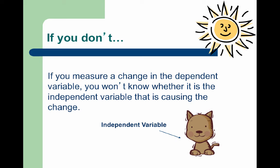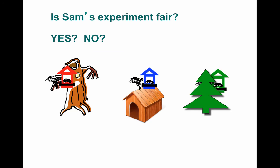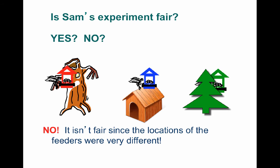Let's see if you can determine if these experiments are fair. Sam wants to know if birds prefer one color feeder to another. He makes three feeders from two-liter bottles and paints one red, one blue, and one green. He fills them with the same amount of sunflower seed and plans to keep them out for one week. He places the red feeder in a large dead tree, the blue feeder on his doghouse, and the green one in a small bushy tree. Sam's experiment is not fair since the locations of the feeders are very different — location would need to be constant.